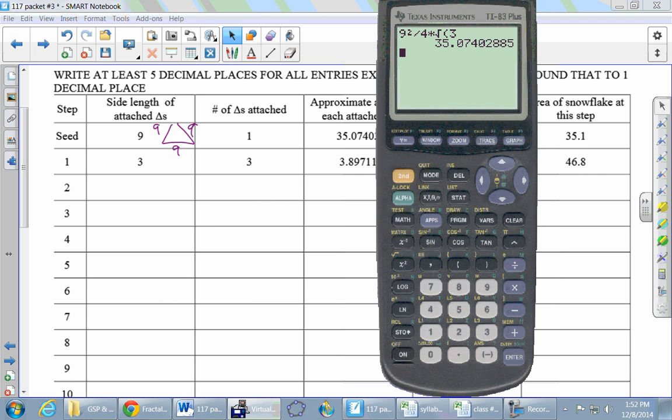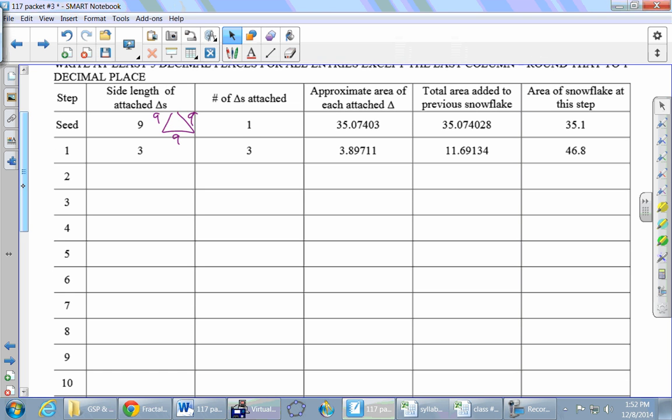The area of snowflake at this step, 35.1. Then we go to the next layer. What is the side length of the triangles you added in the next step? The new triangles have side length of three. How many triangles did you actually add? You added three, one to each of the sides. Now we've got to do a calculation to find the area of each of those attached triangles. That's now three squared divided by four times the square root of three. I get that 3.897.